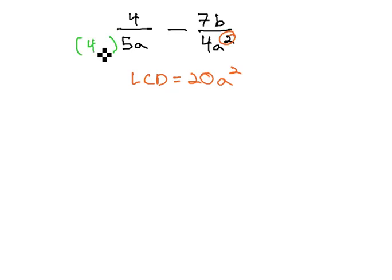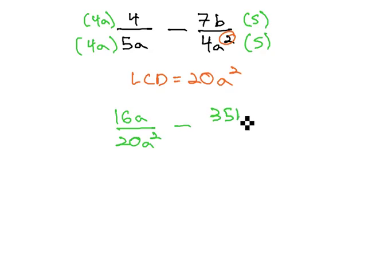This means 5a needs to be multiplied by 4a in the numerator and denominator, giving us 16a over 20a squared, minus the 4 needs to be multiplied by 5, which gives us 35b over 20a squared.